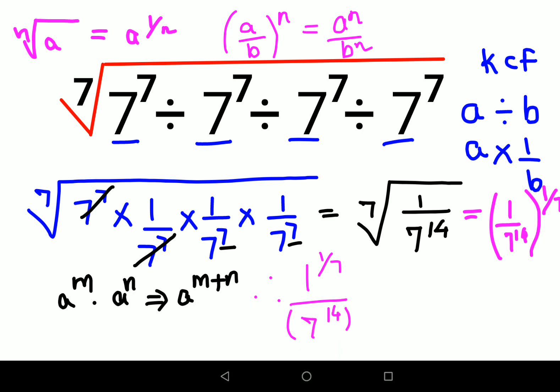So 1 raised to anything is always 1. And A raised to m, the whole raised to n, can be written as A raised to m times n. So using this, I will write this as 7 raised to 14 times 1 upon 7.